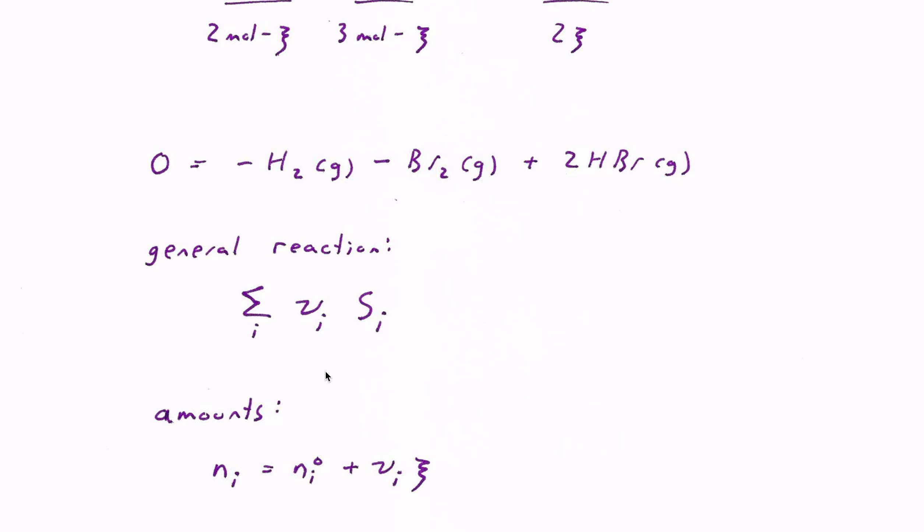That also suggests that we can write a general expression for how much of any species we have. Just like for the H2Br2 reaction, we have the initial amount plus or minus some multiple of the extent of reaction.